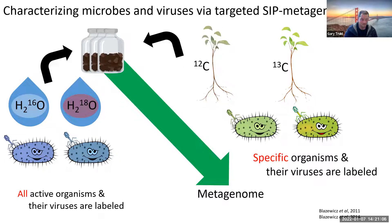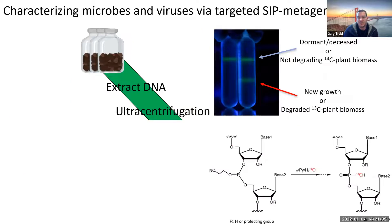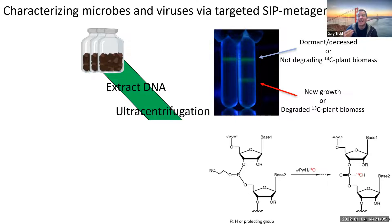This won't label all active organisms - it will only label ones involved in breaking down the plant biomass, so it's substrate specific. Typically we incubate the sample - this will be soil - for a period of time, then extract all the DNA like you would for metagenomics. We then put the DNA on a cesium chloride density gradient and do ultracentrifugation. The DNA separates into different layers based on enrichment - dormant or deceased ones that didn't take up the 18O or 13C are in the lighter fractions.